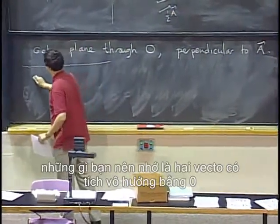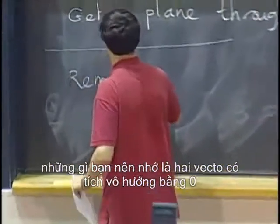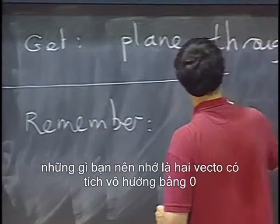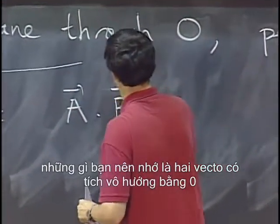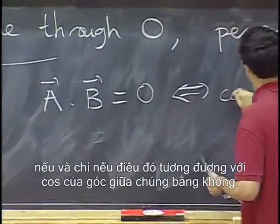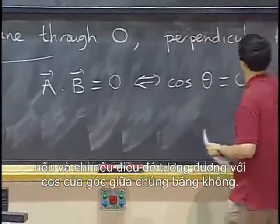And in general, what you should remember is that two vectors have a dot product equal to zero if and only if that's equivalent to cosine of the angle between them is zero.